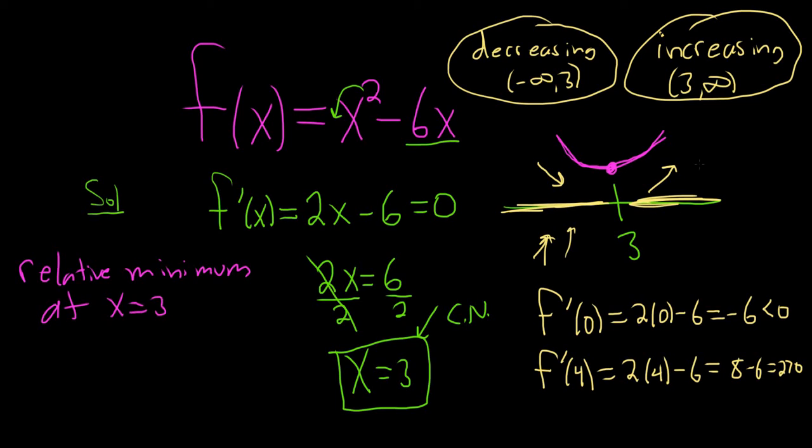That's where we have a minimum. Now, this has to happen at a critical number. So if this was like a vertical asymptote, it wouldn't work. And you would have to actually take this and plug it into the original to get the minimum. In this case, it's not an asymptote. It's just a critical number. So there's no issues.